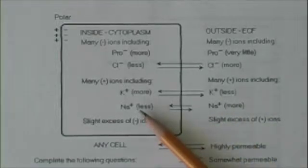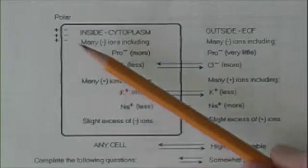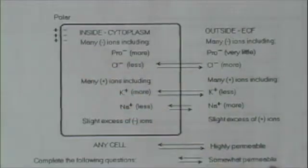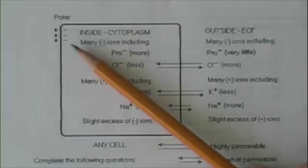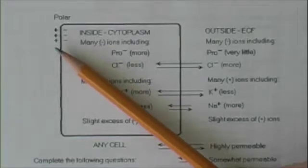Now the net result is that there's a slight excess of negative charges in the cytoplasm of the cell. These charges tend to congregate on the membrane. So on the inside of the membrane there's a slight excess of negative charges and on the outside a slight excess of positive charges.